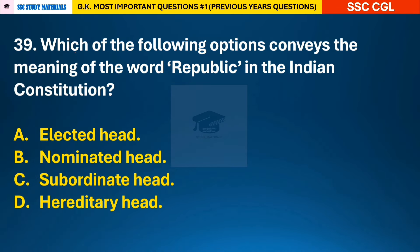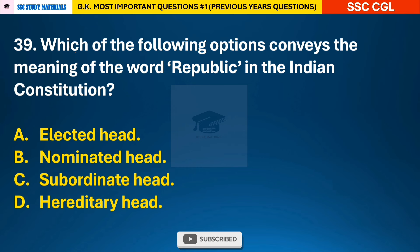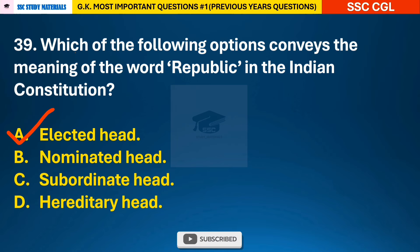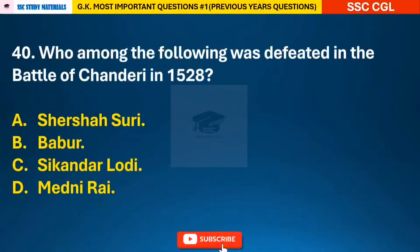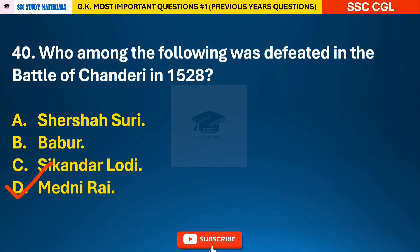Question 39: Which of the following options conveys the meaning of the word 'Republic' in the Indian Constitution? — answer A: elected head. Question 40: Who among the following was defeated in the Battle of Chanderi in 1528? — answer D: Medini Rai.